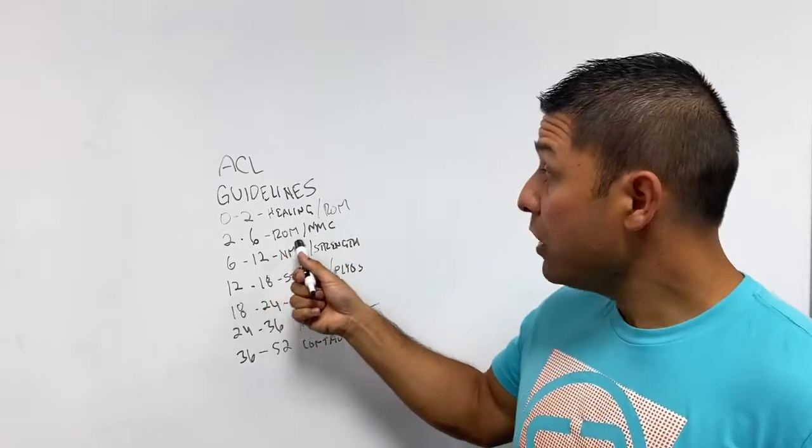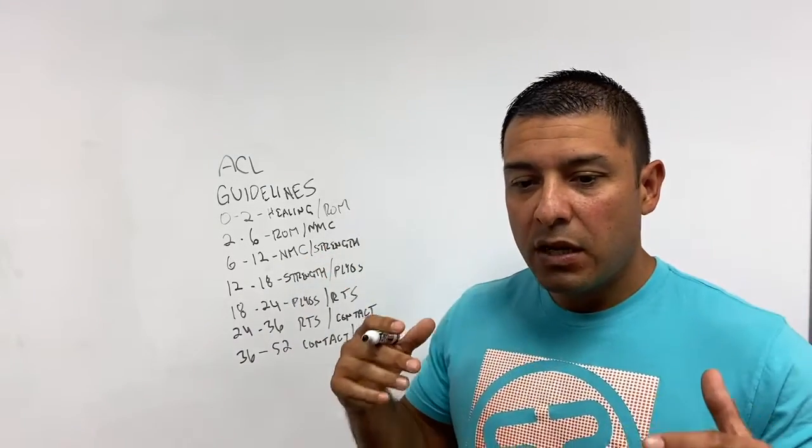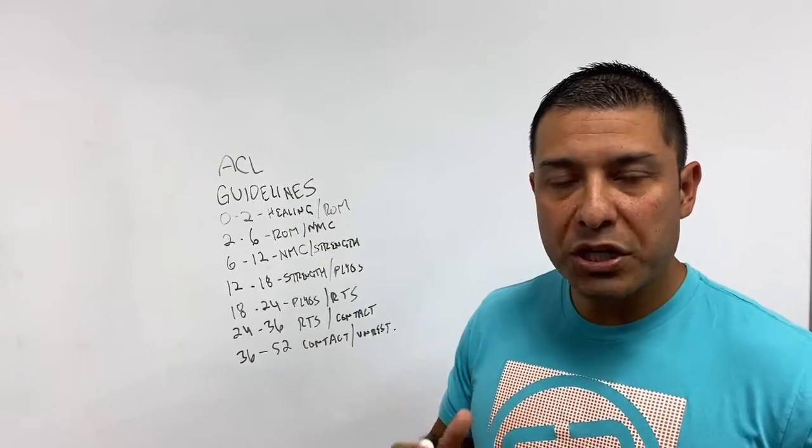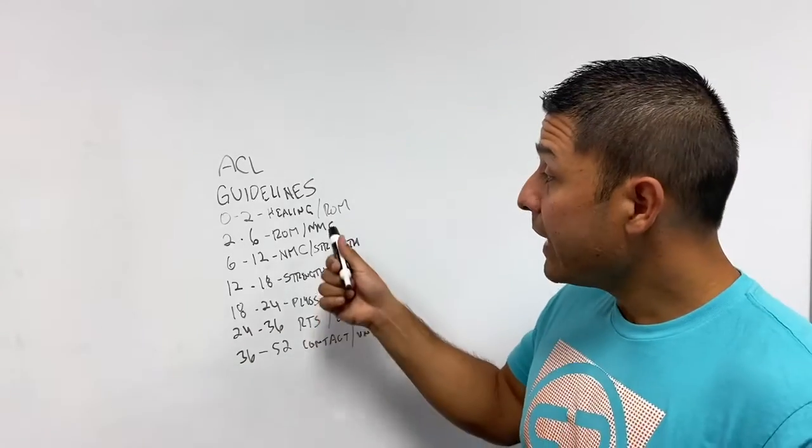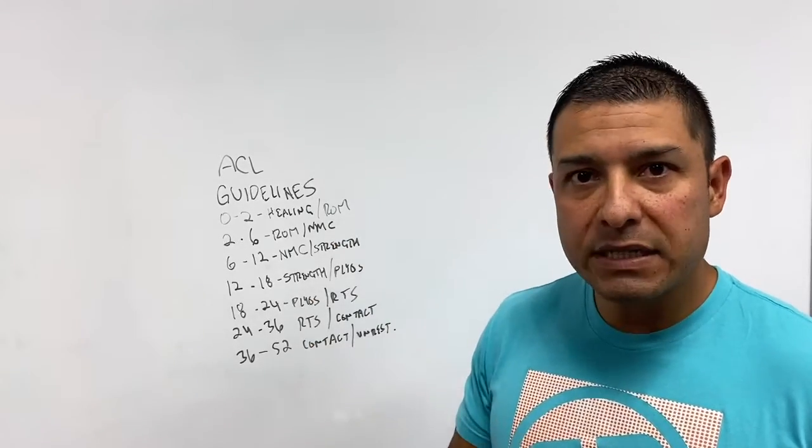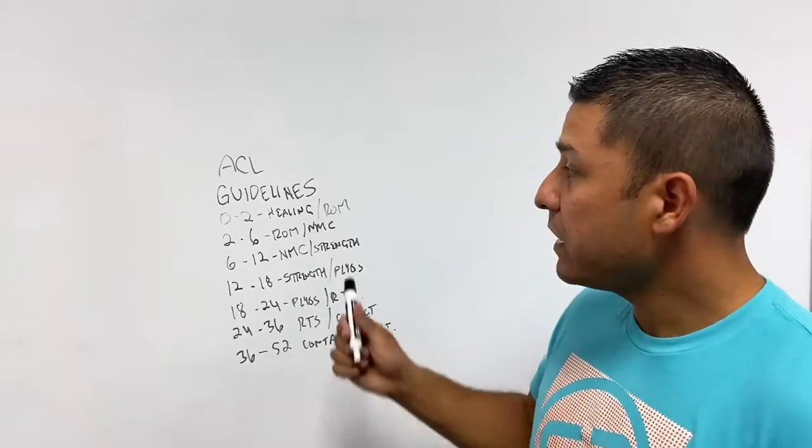Number two, work on the range and start getting some neuromuscular control. From two to six months, work on extension, work on flexion, no need to crank in either direction, just make sure you don't flare them up. At that point you can work on a little bit of neuromuscular control, take it easy, just get some quad activation, glute activation, core, pelvic control, a little bit of everything else.